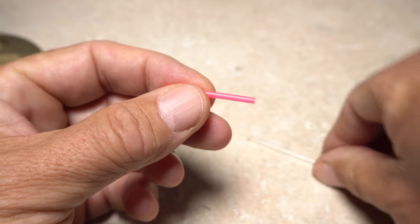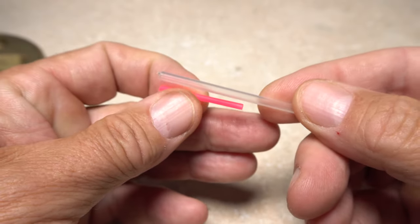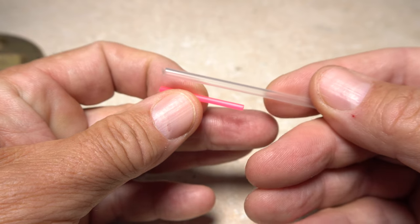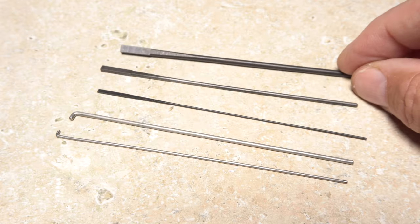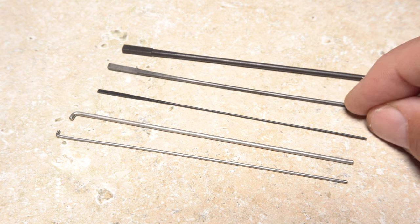Now that we know tube flies are tied on different types of tubes, how do we go about securing those tubes in our tying vise? Most people use mandrels to do the job.